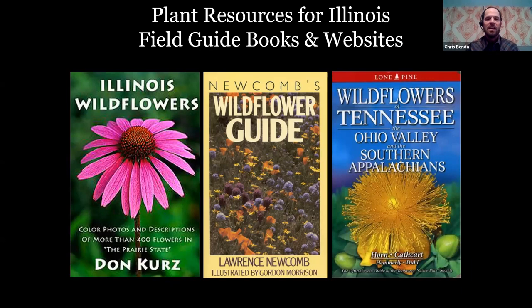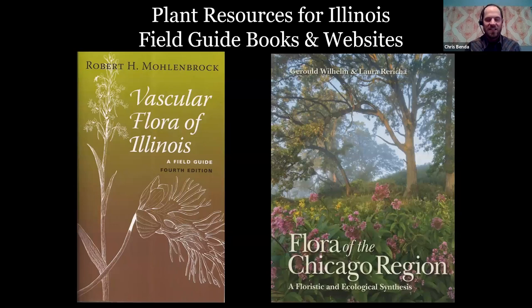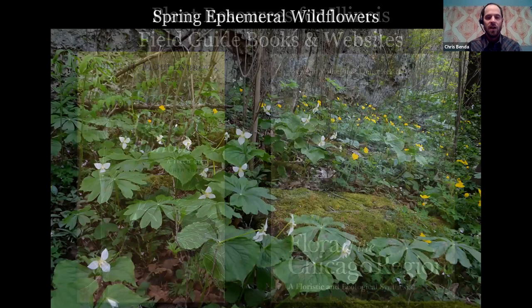If you want to graduate to the technical scientific manuals, we have two options in Illinois. The tome for the state is Dr. Mohlenbrock's 'Vascular Flora of Illinois,' which has all 3,600 species listed. In the Chicago region, there's the amazing recently published work by Jerry Wilhelm and Laura Rericha, the 'Flora of the Chicago Region.' These are technical books somewhat difficult for lay people to use, but they have all the species known in the state or their region listed in them.